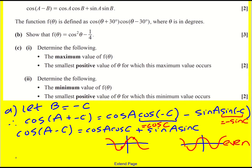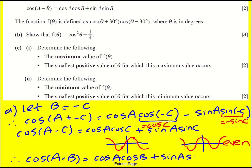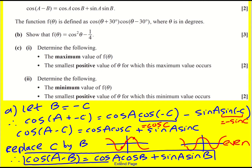So the result follows: cos(a-b) equals cos(a)cos(b) plus sin(a)sin(b), just replacing c by b. Quite tricky if you've never seen that before, but that's something to take away from this question — even and odd functions, particularly for cos and sine, these two results.